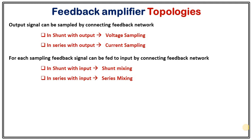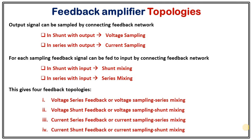After knowing these four different types of connections — two at the output and two at the input — by combining them we can generate four different topologies for a feedback amplifier. Sometimes people say there are four different types of feedback amplifiers, but from a topological point of view there are four types, while in terms of feedback type there are two: negative feedback and positive feedback.